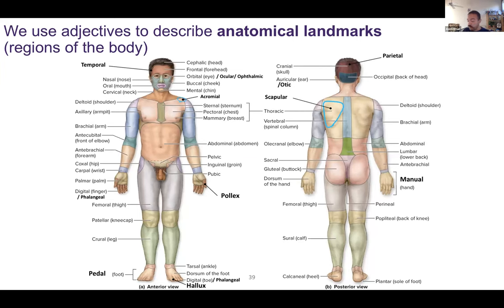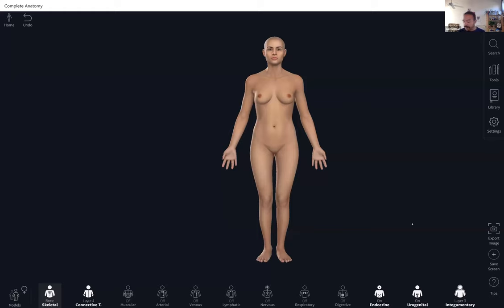Hey everyone. We are going to talk about regions of the body — names of regions of the body. This is chapter one notes, slide 39. Pictured here is an anterior and posterior view of a person, front and back, with different regions labeled. I'm going to switch over to Complete Anatomy and we'll write it all out together. A male model is pictured in the notes; here is a female model, newly added to Complete Anatomy.